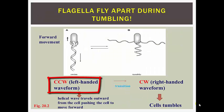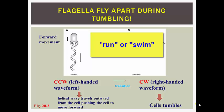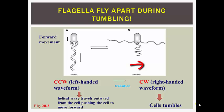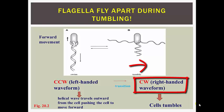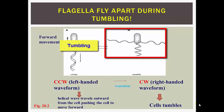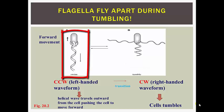When the rotors of the flagella rotate counterclockwise, a helical wave travels outward from the cell, pushing the cell to move forward — this forward movement is called a run or swim. On the other hand, when rotors rotate clockwise, the filaments undergo transition to a right-handed waveform, causing the flagella to fall apart and the cells to tumble. When the flagella rotate clockwise, they unwind and leave the filament bundle, resulting in no coordinated flagellar movement and the cells move erratically for a fraction of a second — this is called tumbling. Then the flagella move counterclockwise again to reform the bundle and the cell runs again, but in a randomly different direction.